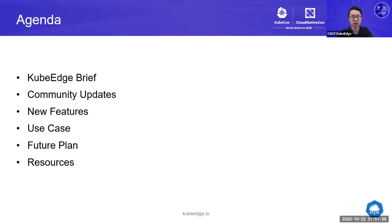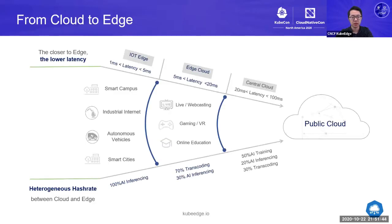And then I will quickly go through the use case and the future plan, and hopefully we can have time for Q&A. We know that the network is becoming more and more powerful today, and more and more people start to build business on the edge. Moving from central cloud to edge is very helpful to improve the end-to-end business latency and also reduce the bandwidth consumption between cloud and edge.